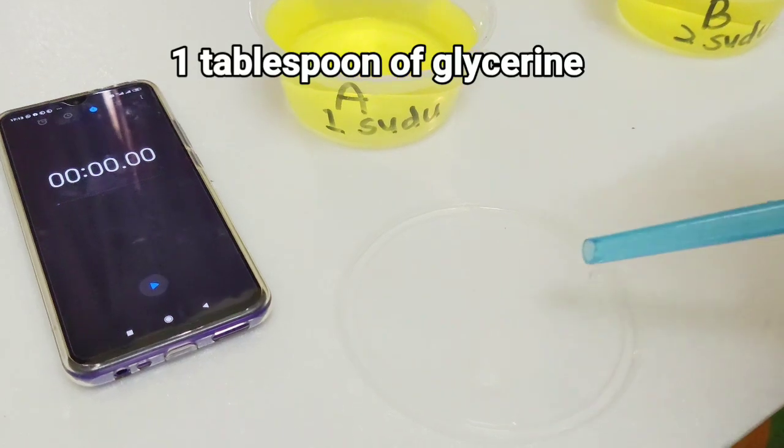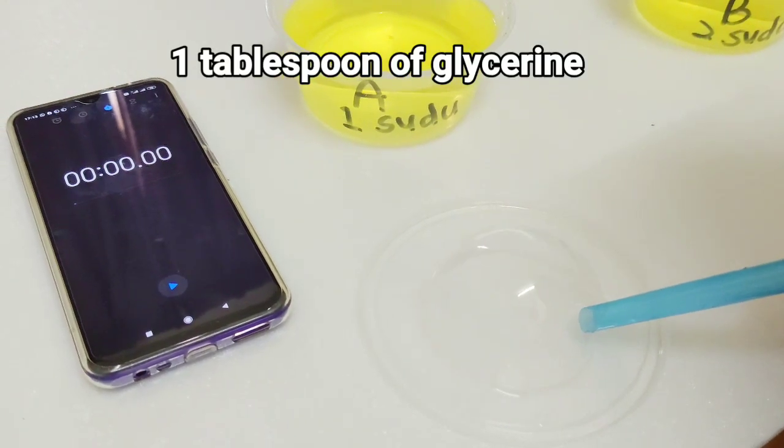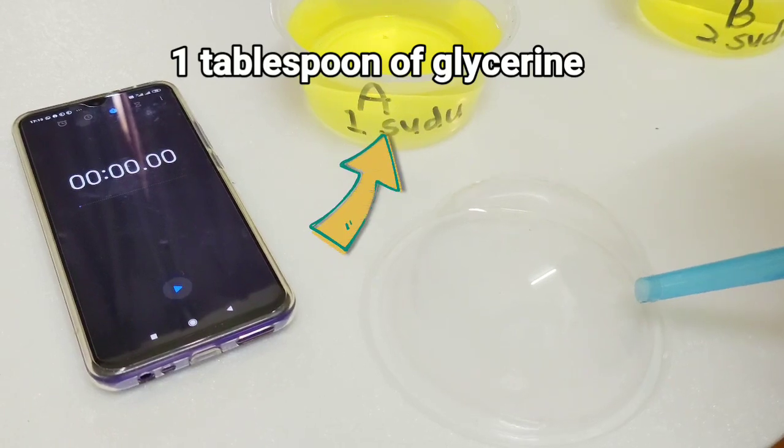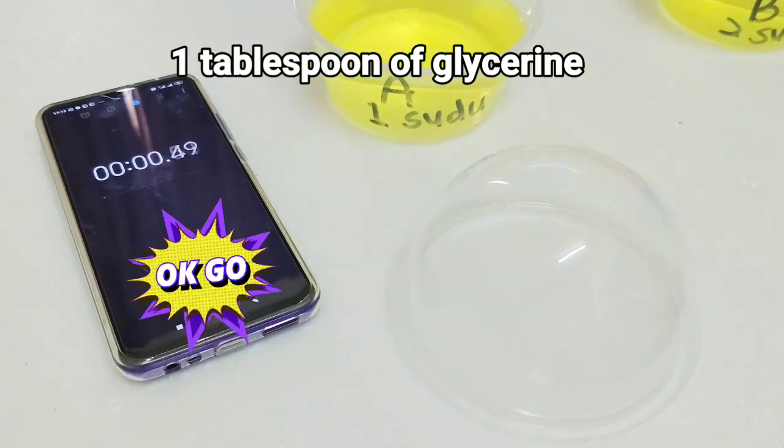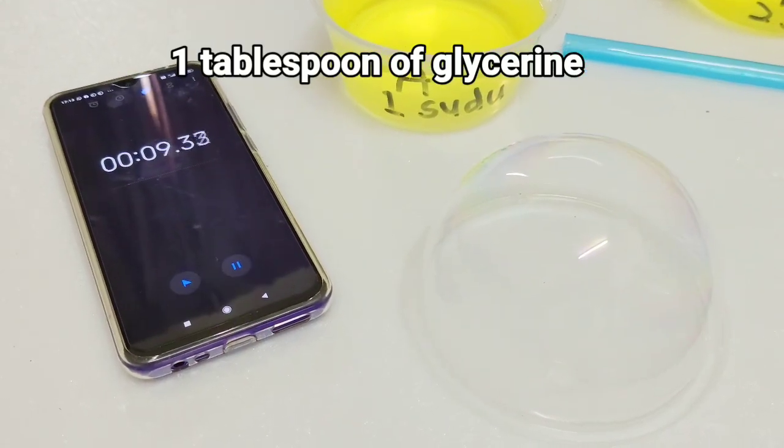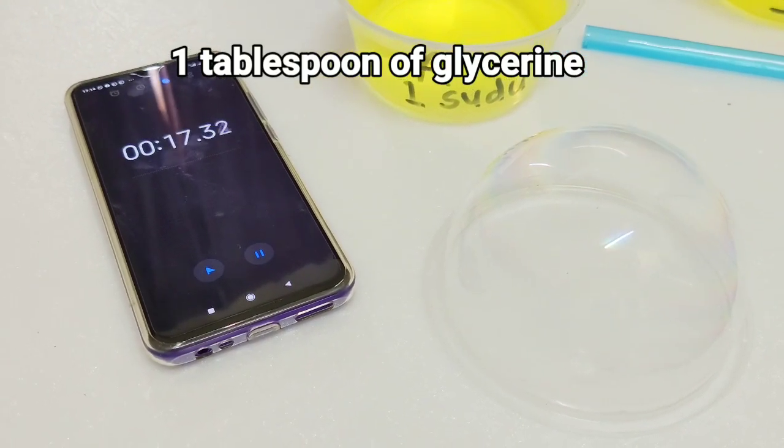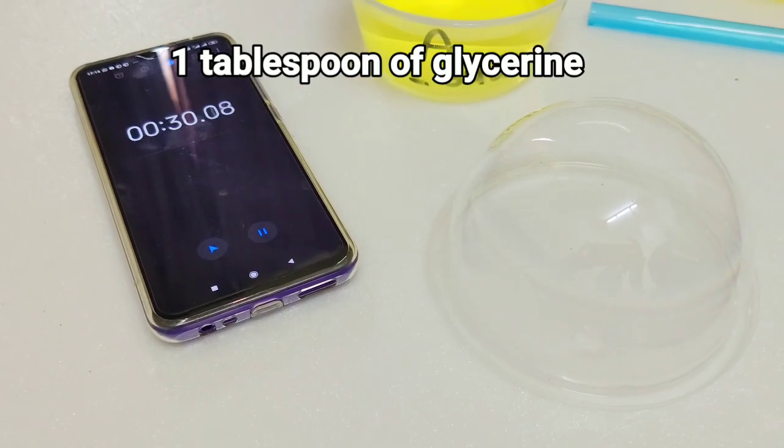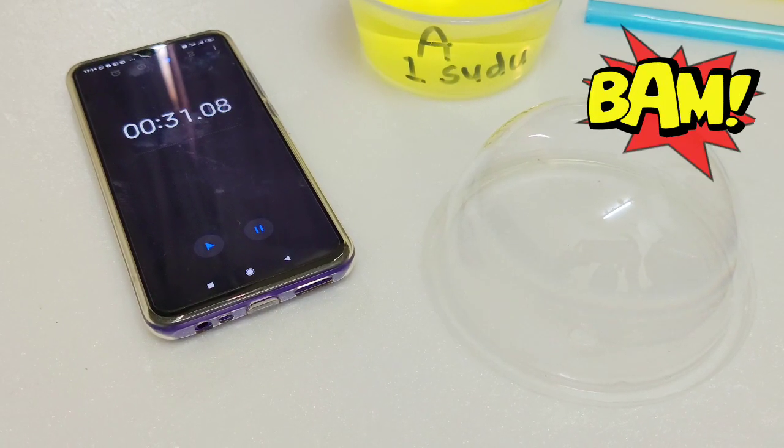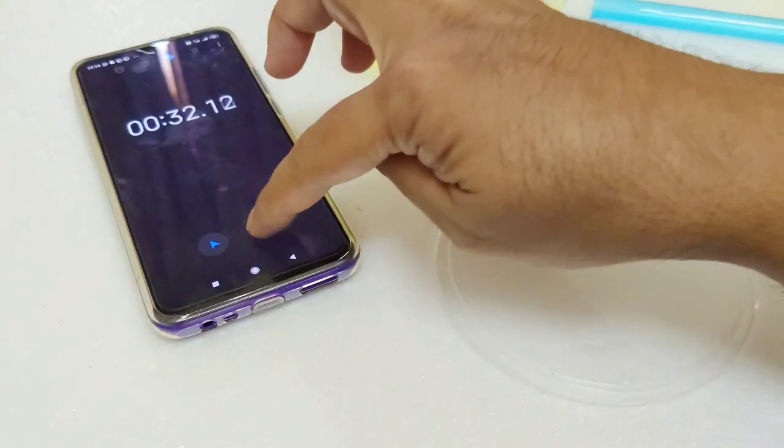Now we're gonna start our experiment by using 1 tablespoon of glycerin. Blow the soap bubbles and set the stopwatch. We need to see the time taken for the soap bubbles to burst. Pop! Look! The soap bubbles burst.